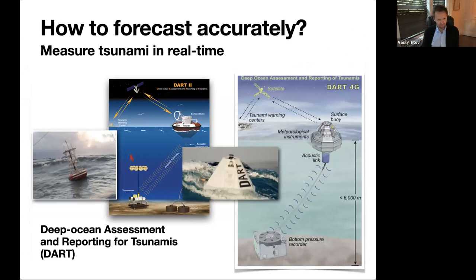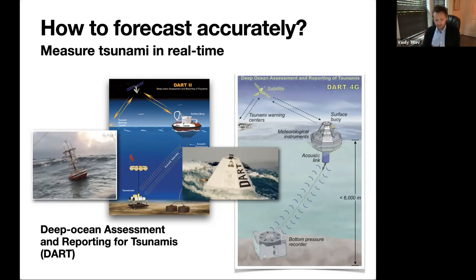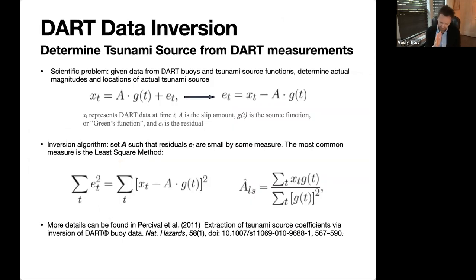That's when the DART system started to pay off. It had been a PMEL initiative but became a worldwide demand. The instrument measures static pressure at the bottom of the ocean. Since tsunami waves involve movement of the entire water column, they change the static pressure. The pressure sensor is sensitive enough to detect even a one-centimeter tsunami — not only detect but resolve it with accuracy good enough to use in data inversion.